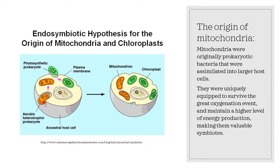Mitochondria have a very high antioxidant capacity, allowing them to protect themselves against oxidation. They were then assimilated into larger organisms. Around the same time, chloroplasts — those photosynthetic bacteria — were also assimilated. Eukaryotic cells that assimilated both chloroplasts and mitochondria went on to become plants, while cells that just assimilated mitochondria went on to form animal life.